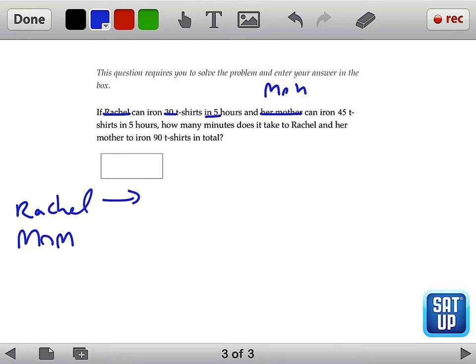If she is able to iron the same number of t-shirts in every hour, then Rachel's speed is actually 30 divided by 5, which is 6 t-shirts per hour.